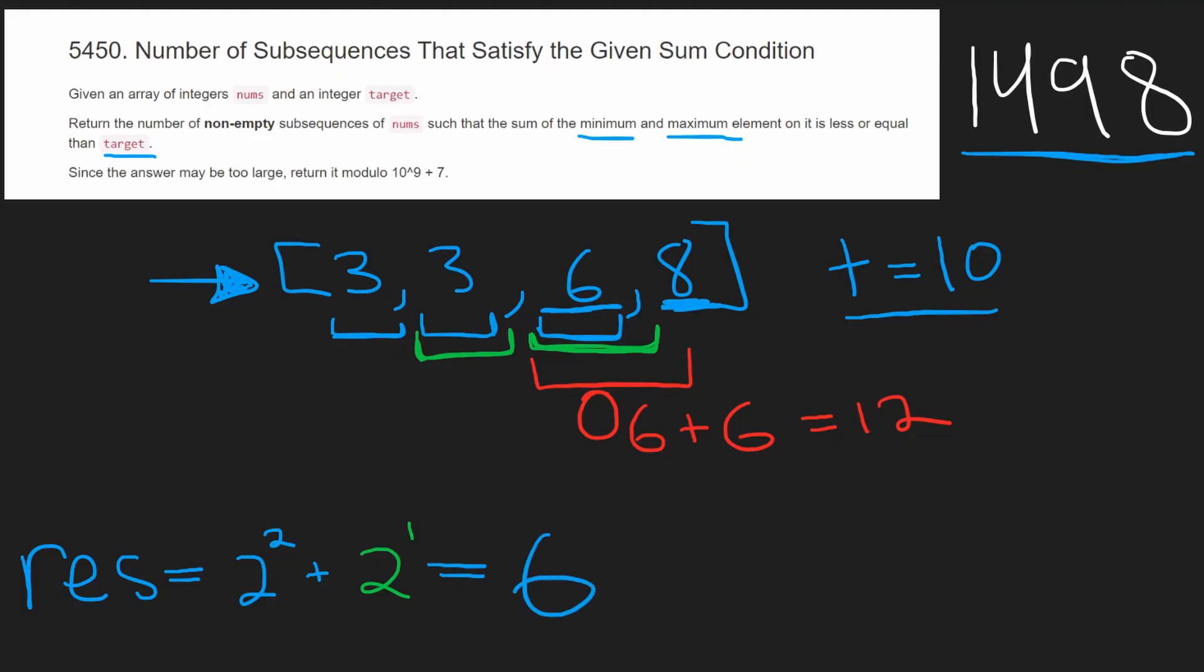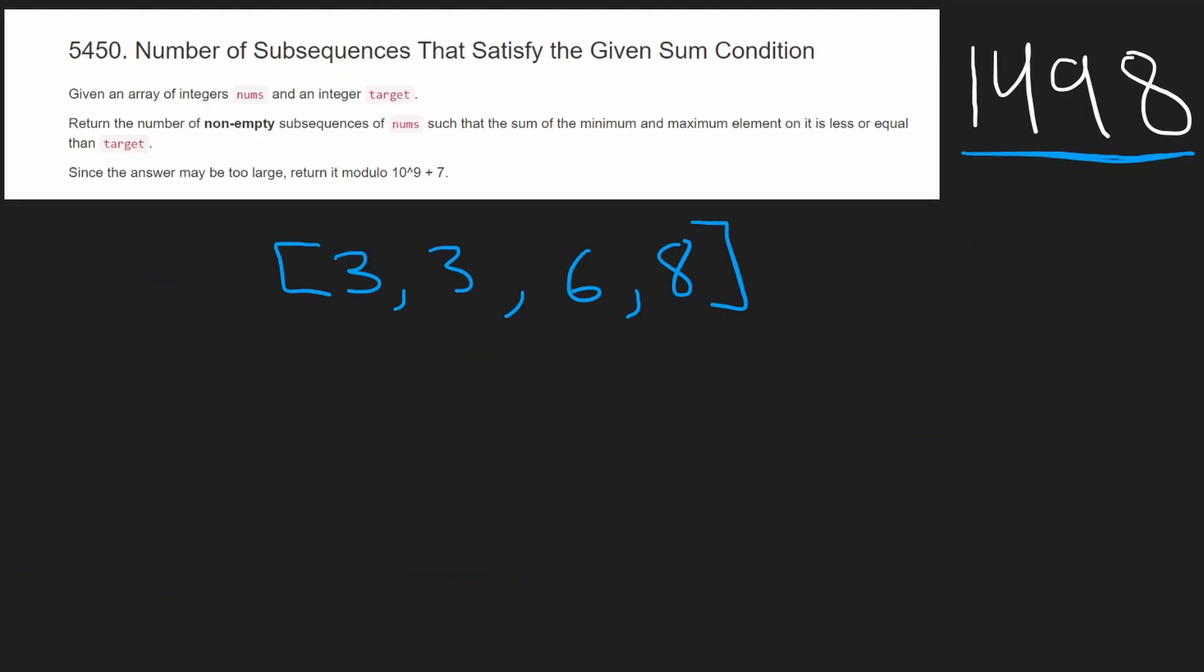So like I mentioned, this array was already sorted for us, which is what this problem depends on. But what if it wasn't sorted? What if it was 6, 3, 8, 3? Well, then we can't really run our algorithm.